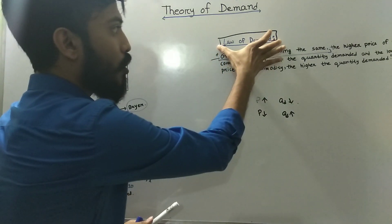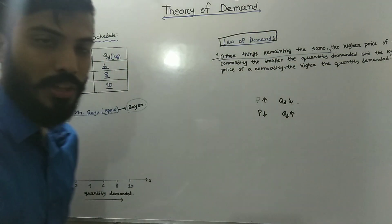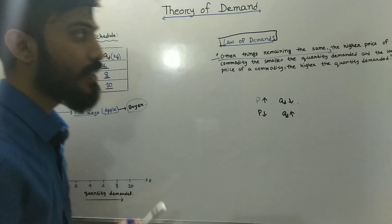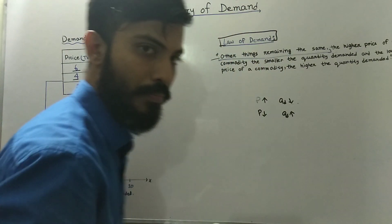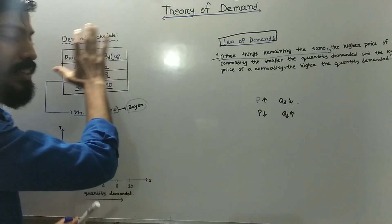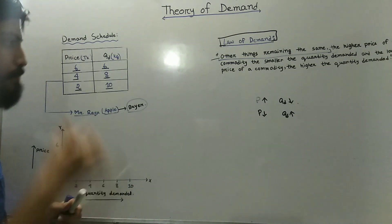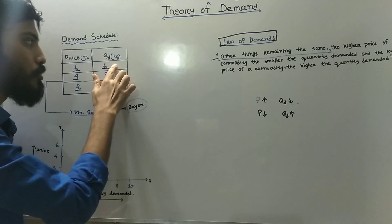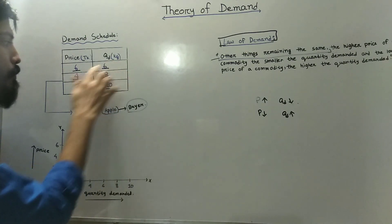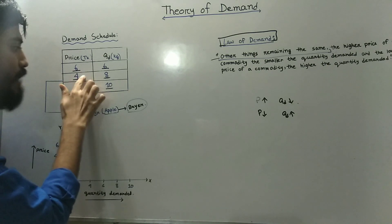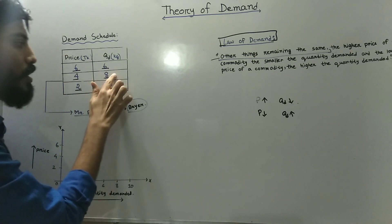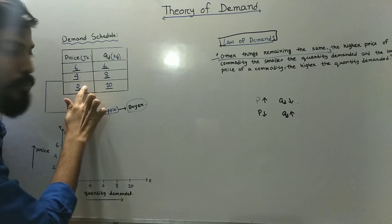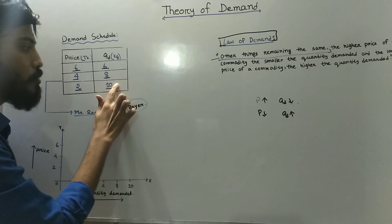I will explain the law of demand with the help of a demand schedule. In this case, we will describe the demand schedule. When the price is 4, the quantity is 6 kg. When the price is 6 kg, the only quantity is 6 kg. When the price is 8 kg, the quantity changes accordingly.